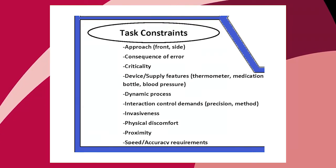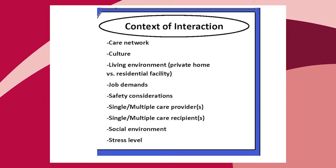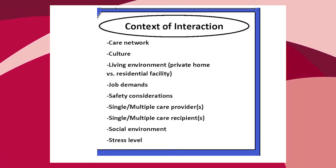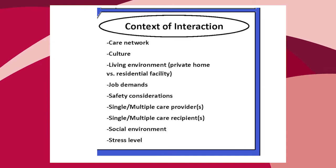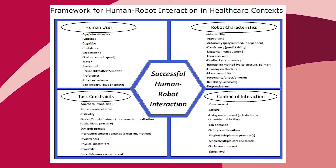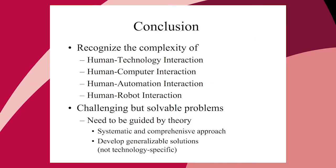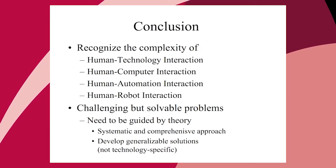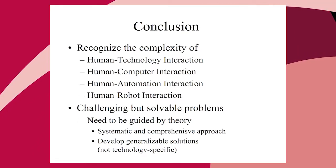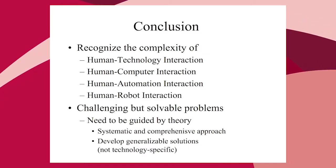Lastly, the broader context matters — the care network, the culture, whether it's in the home or a residential facility. All of these play a role, creating a large network of factors important for any particular human-robot interaction. My take-home is to recognize and embrace this complexity, whether we're talking about human-computer interaction, human-automation interaction, or human-robot interaction. Both the technology side and the human side are complex.